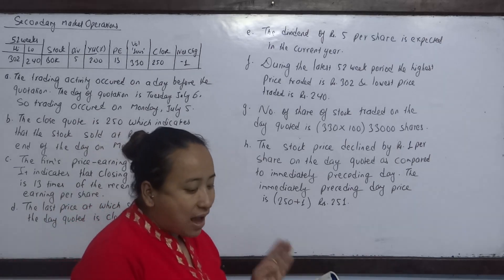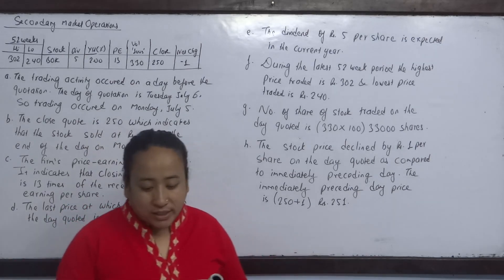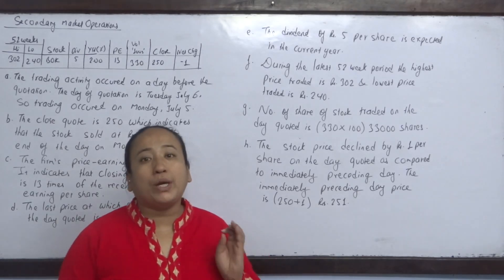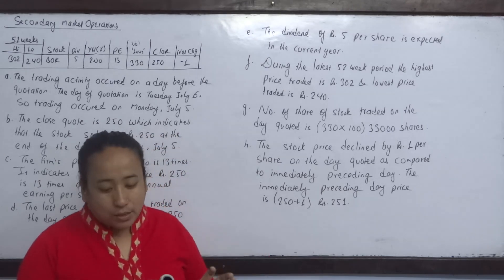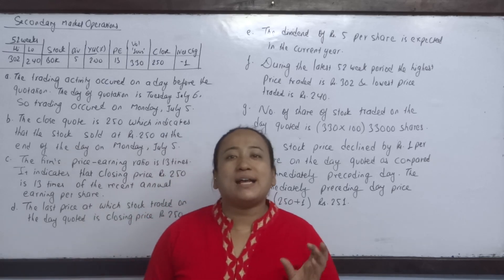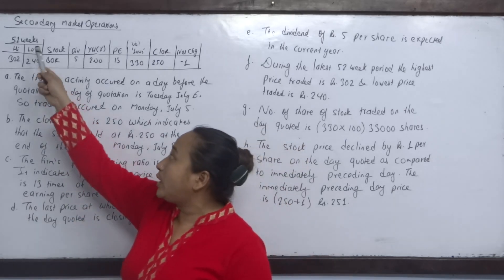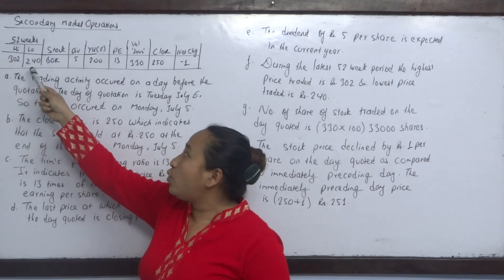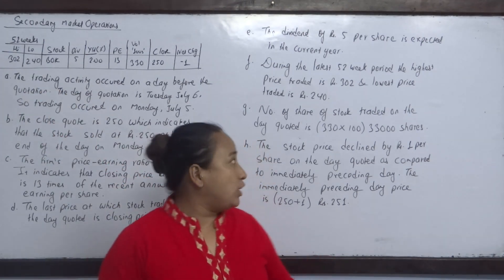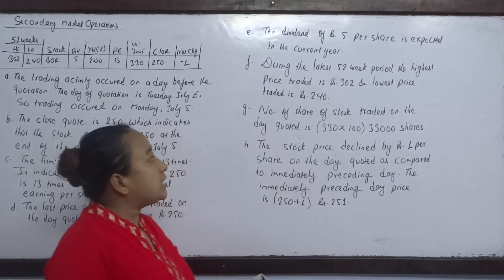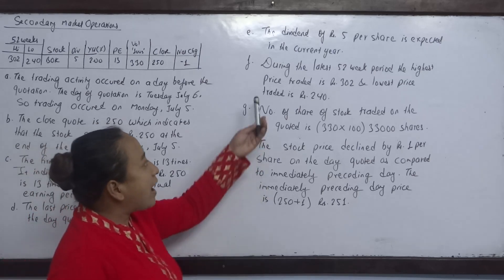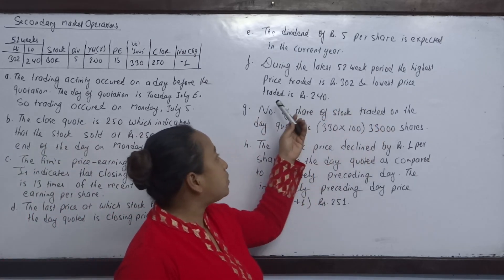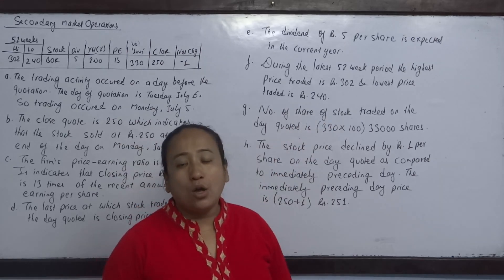What are the highest and lowest prices at which the stock traded during the latest 52-week period? The 52-week highest price is 302 and the lowest price is 240. During the latest 52-week period, the highest price traded is Rs. 302 and the lowest price traded is Rs. 240.